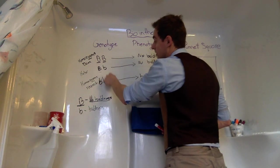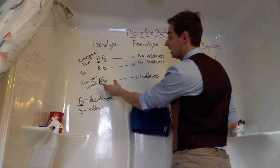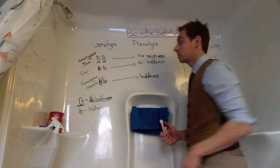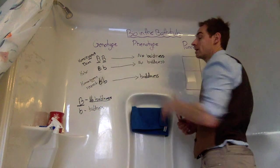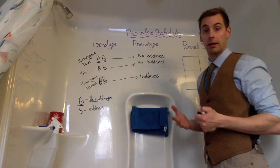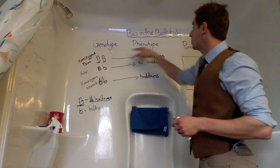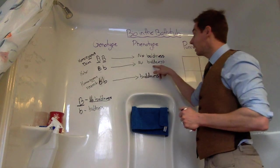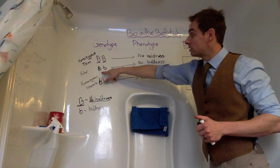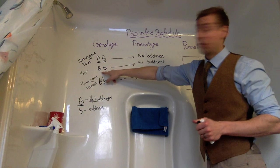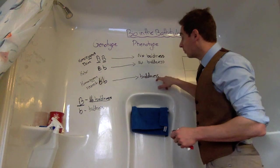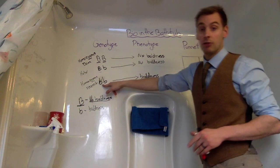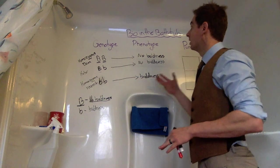Genotype deals with the genes specifically, and then the alleles of those genes. So dominant, recessive, or homozygous recessive. And the phenotype is, what does the physical characteristic look like? We have a dominant allele taking over with BB and Bb, and we end up with baldness when we have homozygous recessive because we have no dominant traits available.